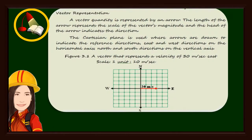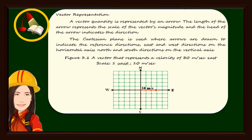A vector quantity is represented by an arrow. The length of the arrow represents the scale of the vector's magnitude, and the head of the arrow indicates the direction. The Cartesian plane is used where arrows are drawn to indicate the reference directions. East and west directions are on the horizontal axis, and north and south directions are on the vertical axis.